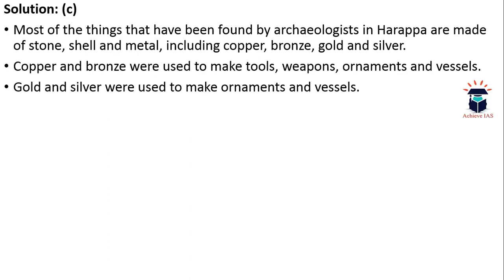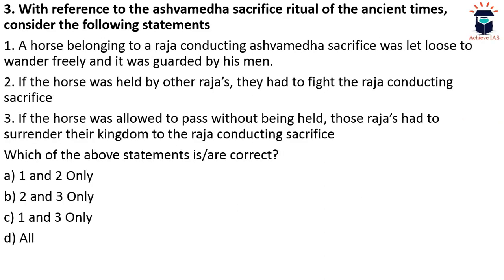The answer is C — both are incorrect. Most things found by archaeologists in Harappa are made of stone, shell, and metal including copper, bronze, gold, and silver. Copper and bronze were used to make tools, weapons, ornaments, and vessels. Gold and silver were used to make ornaments and vessels.